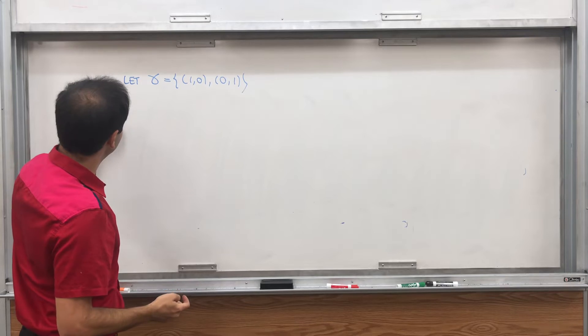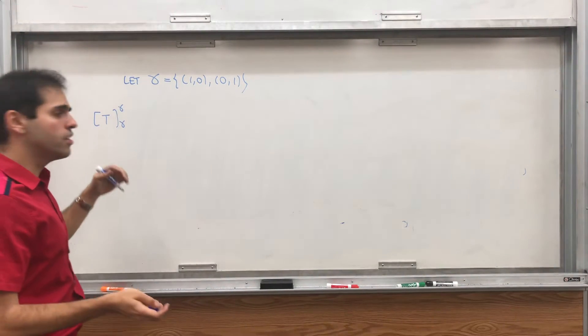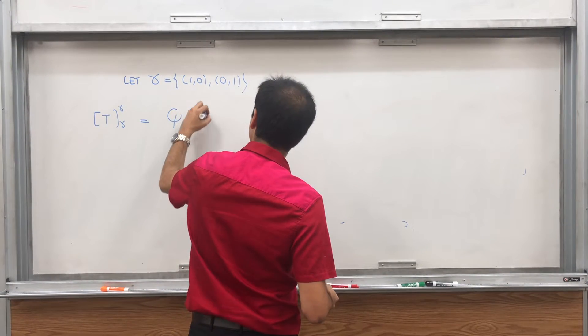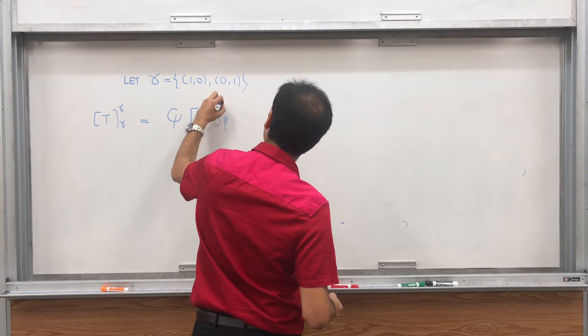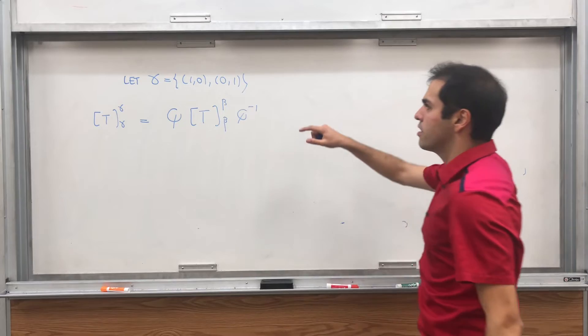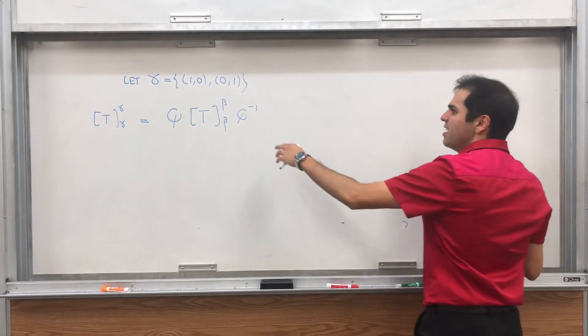And remember, in a previous video, I showed you how to easily calculate a new matrix in terms of an old matrix. Namely, all you do, you conjugate by what's called a change of coordinates matrix. So it turns out that this equals Q T Q inverse,